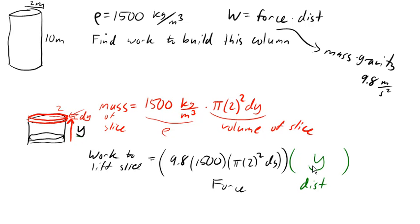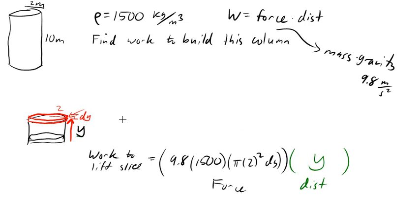Now with all that done, now that we have this formula for the work to lift this one slice, we can ask what is the total work to build the entire column. And for that, we're just gonna add up all these individual slices. And when we're talking about super tiny little slices, we are talking about an integral.